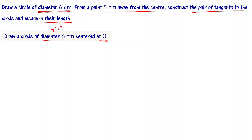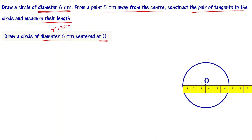The diameter is 6 cm, so the radius is 3 cm. Draw the circle using a compass set to 3 cm. Now we have to mark a point 5 cm away from the center. Let us do that.